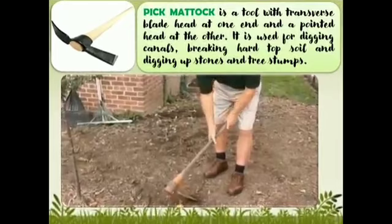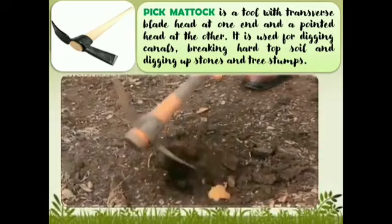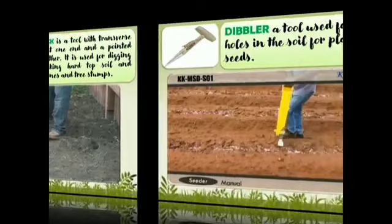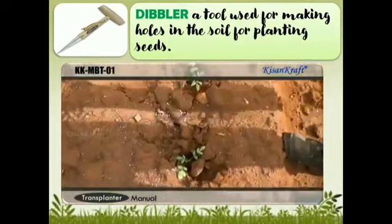Pick mattock. It is a tool with a transverse blade head at one end and a pointed head at the other. It is used for digging canals, breaking hard top soil, and digging up stones and tree stumps. Dibbler. It is a tool used for making holes in the soil for planting seeds.